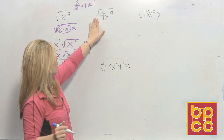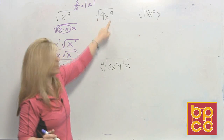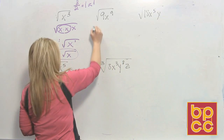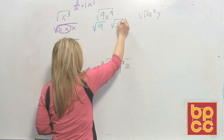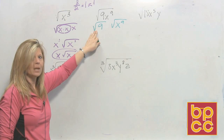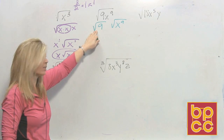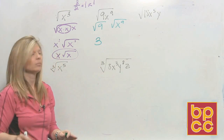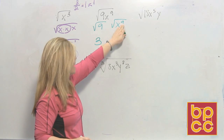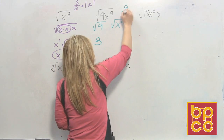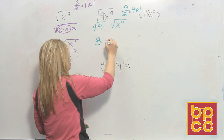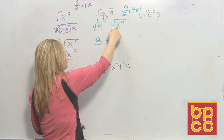Next example: square root of 9x to the 9th. These are connected by multiplication, so I'm asking you to do two things — square root 9 and square root the variable. For the number: what times itself is 9? Because 9 is a perfect square, we know that answer is 3. Now for the variable: square root means making groups of 2, so divide the exponent by 2. If you take 9 and divide it by 2, you get 4 with a remainder of 1. So on the outside would go x to the 4th.